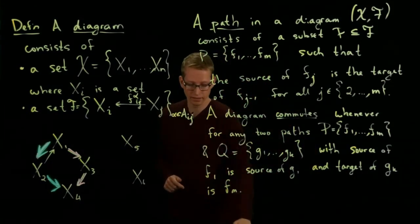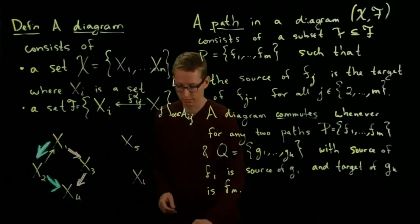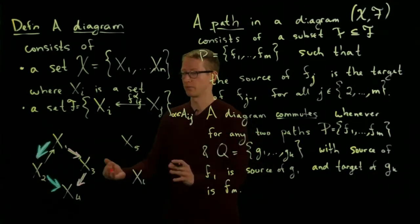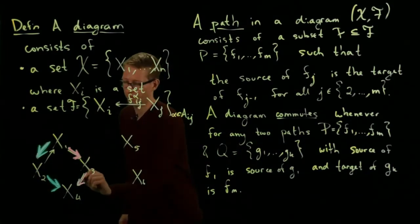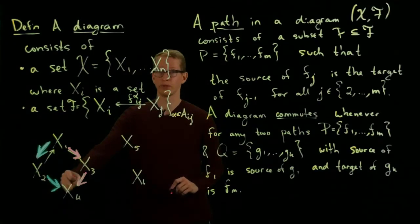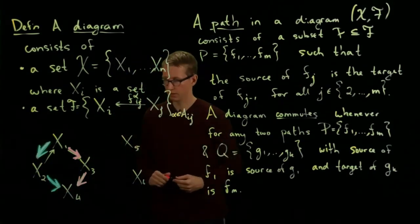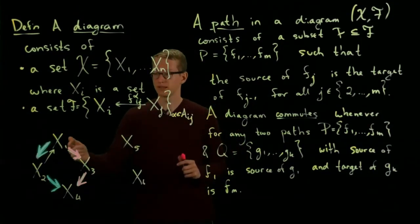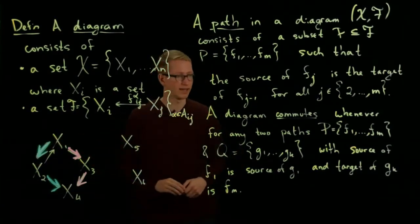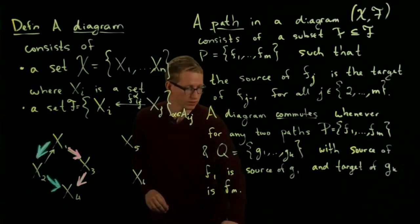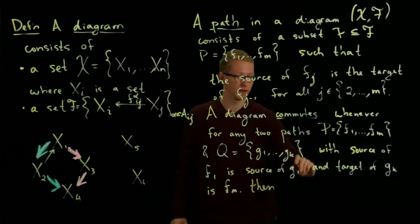So this condition has to be satisfied for every pair of paths. This diagram commutes if this happens for every single path. So far I've only drawn two paths. Notice that the source of this path in pink is the same as the source of this path in blue. And the targets also match up. The target is X4. So this diagram would have to commute, which means that this composition of functions and this composition of functions are exactly equal. If for any two paths satisfying this condition, then this composition equals that one.